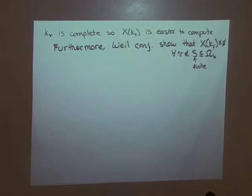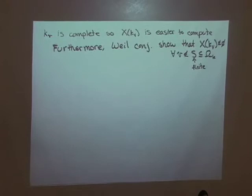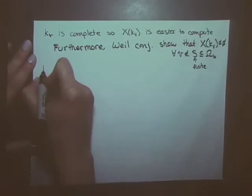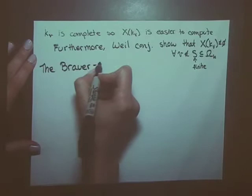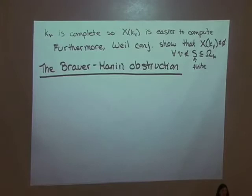We already saw that this is not sufficient — we saw an example this morning that had K_v-points for every place v but no K-point. So the question is: why not? What other conditions have to be checked? What is special about the set of adelic points that come from a K-rational point? The first thing I'm going to talk about is something called the Brauer-Manin obstruction. This was developed by Manin, and the example this morning is an example of this type.